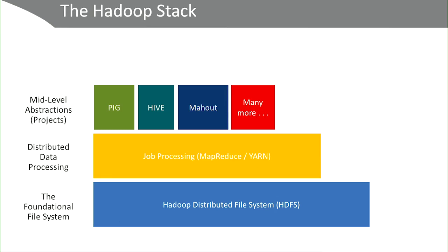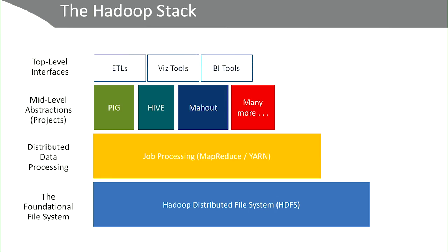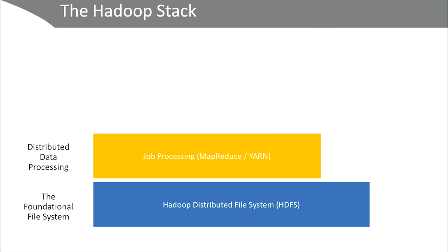There are also external sources you might connect to and destinations — for example, data visualization or business intelligence tools. Those hooks into the Hadoop system allow you to pull data out and get value from it. Those are not really part of the Hadoop open source architecture, but they do work with the Hadoop system. We're going to focus specifically on the first two foundational layers: the database with HDFS and then the processing layer — first MapReduce and then Yarn.